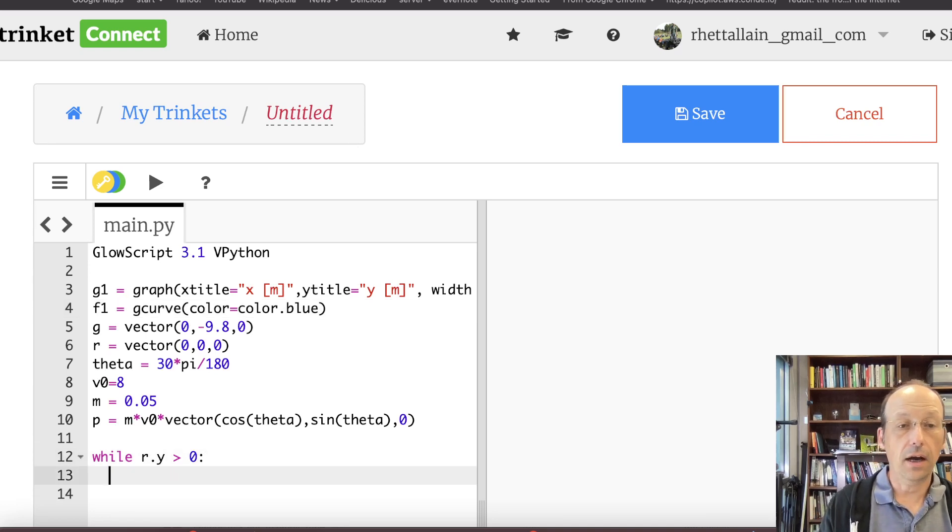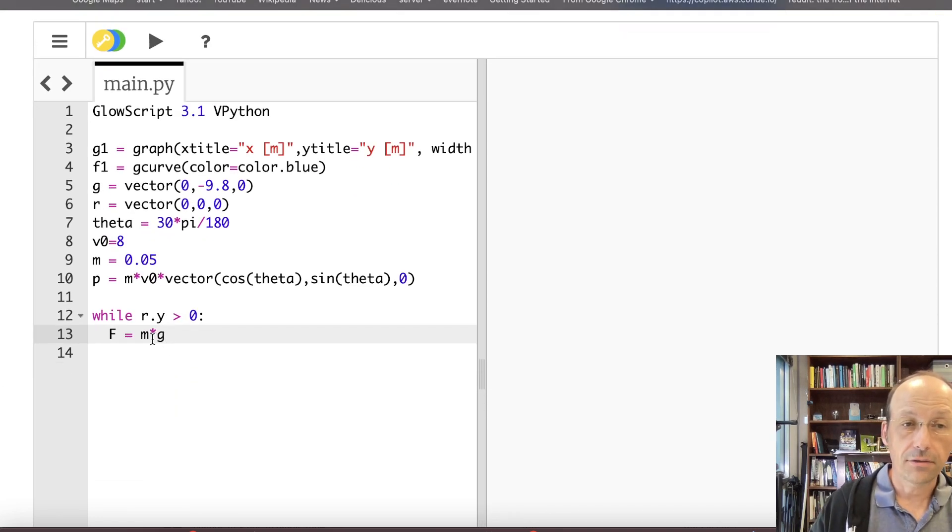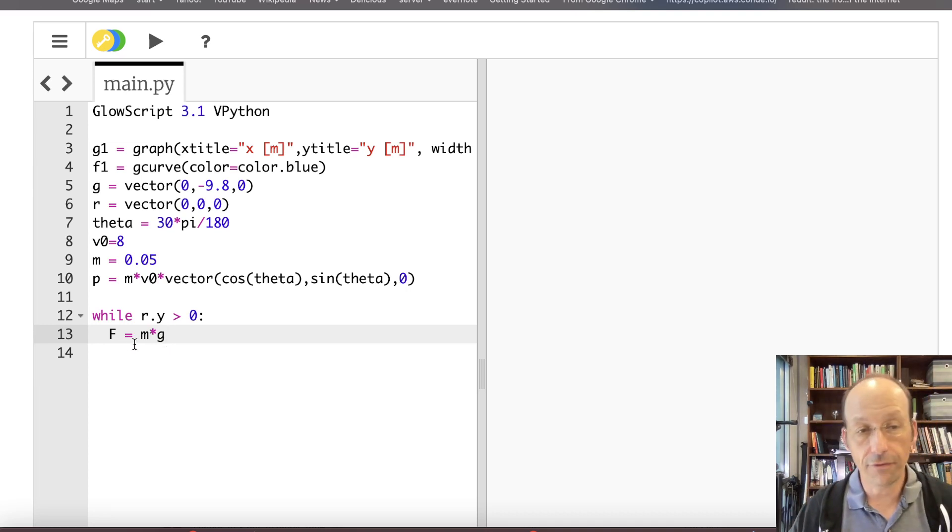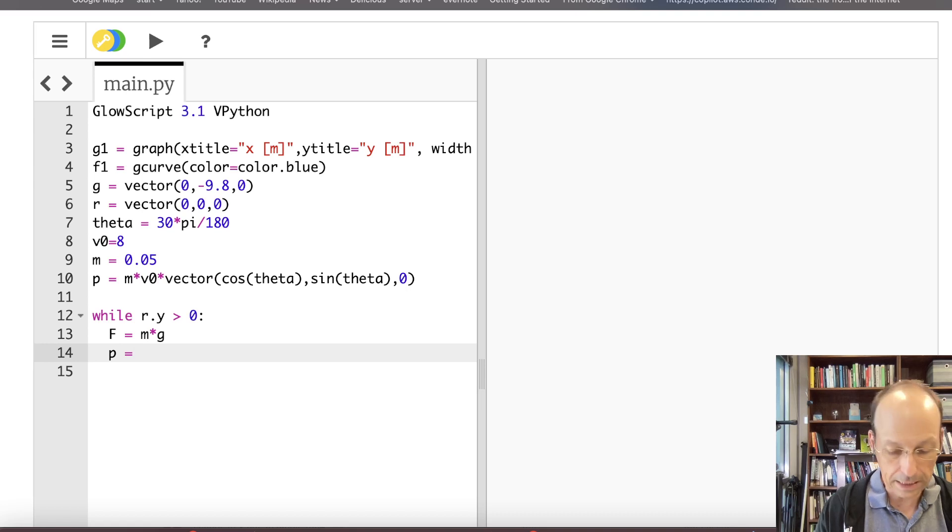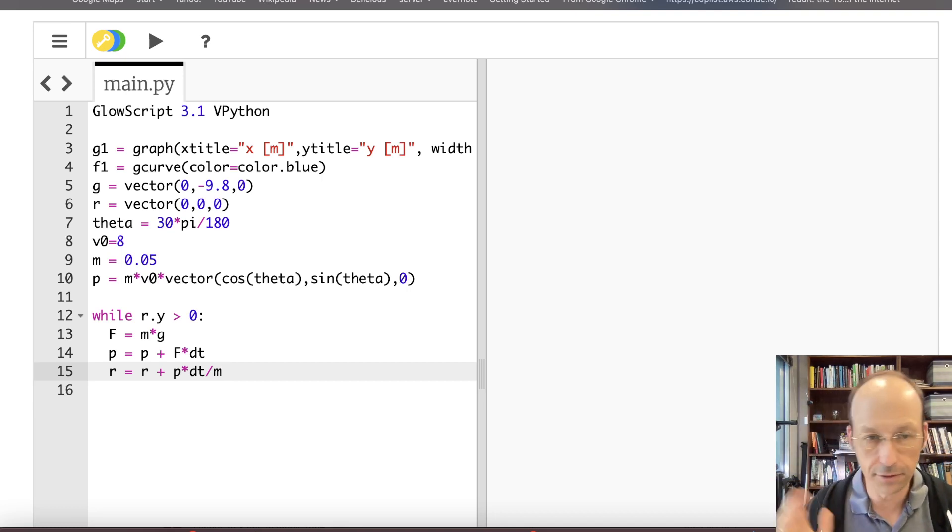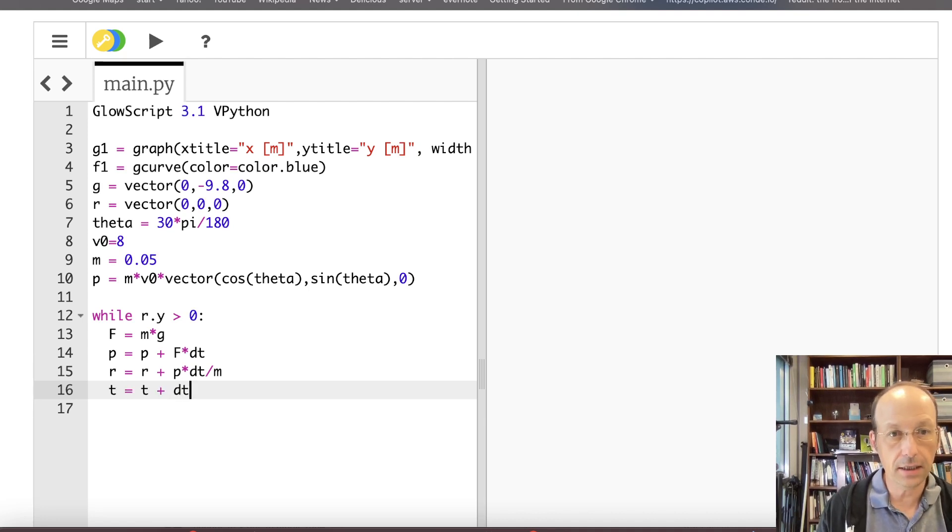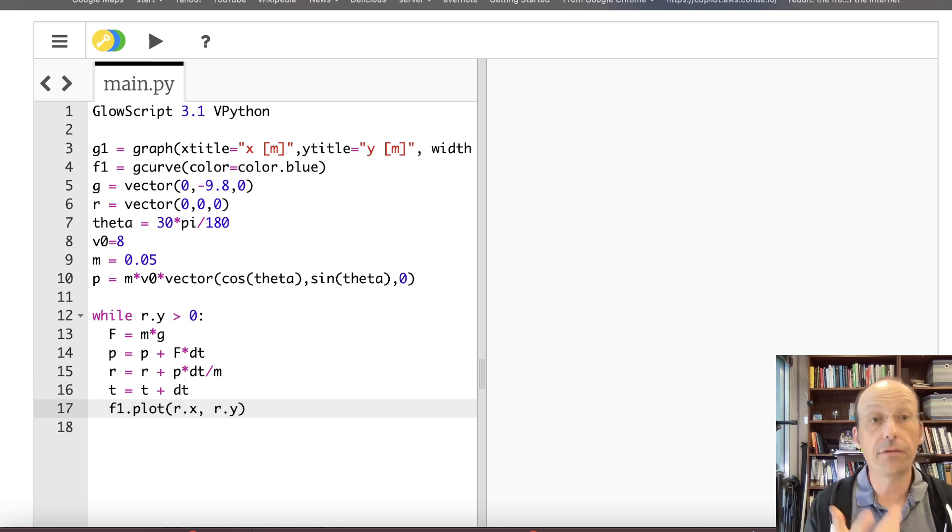Down here I'm going to first update the momentum. I can calculate the force. F equals M times G. G is a vector, M is a scalar. So when I multiply those together I get a vector. P equals P plus F times DT. This is my momentum update formula. This takes the old value of momentum, adds F times delta T to it, and makes that the new momentum. Now I can update the position. R equals R plus P times DT divided by M. And then T equals T plus DT. And let's plot it. F1 dot plot, R dot X, R dot Y.